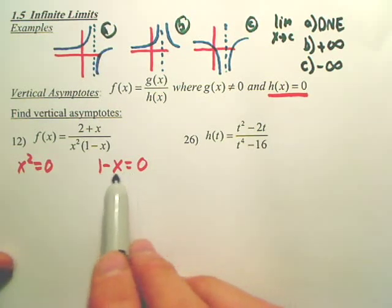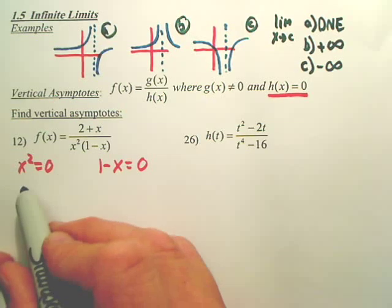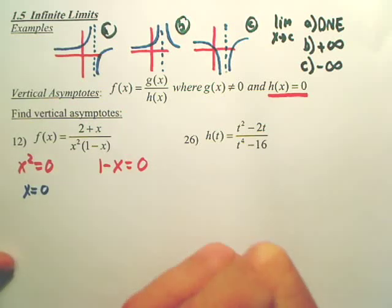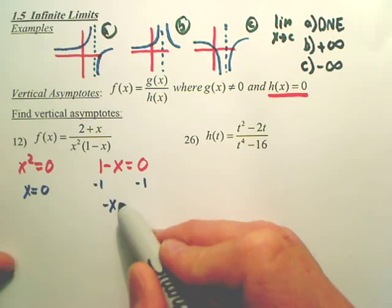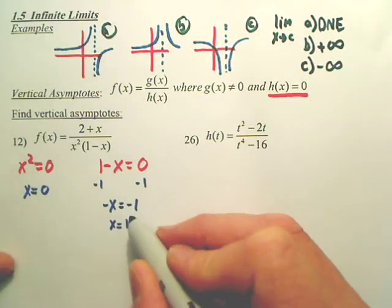So, these are my possible vertical asymptotes. It's where h of x, or the bottom, equals zero. So this answer, square root both sides, you've got zero. Here, when you minus the one over, you've got x equals one.